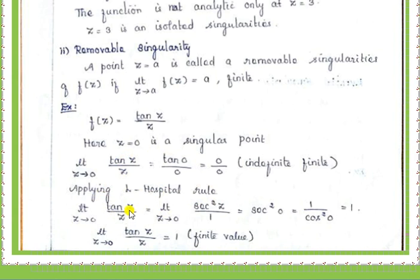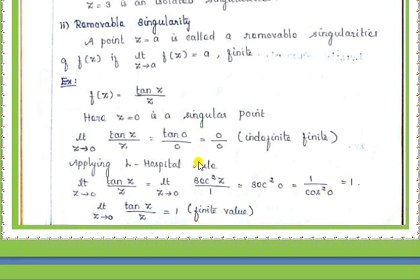Applying L'Hôpital's rule to tan z by z means differentiating numerator and denominator separately with respect to z. The differentiation of tan z is secant square z, and the differentiation of z is 1. So we get secant square z by 1. Replacing z equal to 0 gives secant square 0, which equals 1 by cos square 0, which is 1 by 1 equals 1. So after this process we get a finite value, confirming z equal to 0 is a removable singular point.